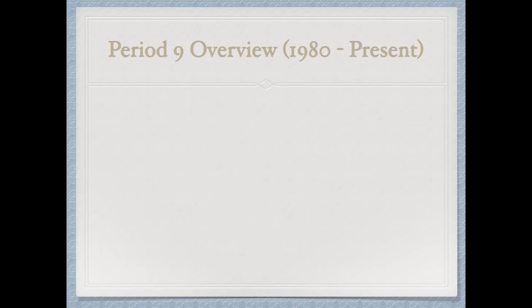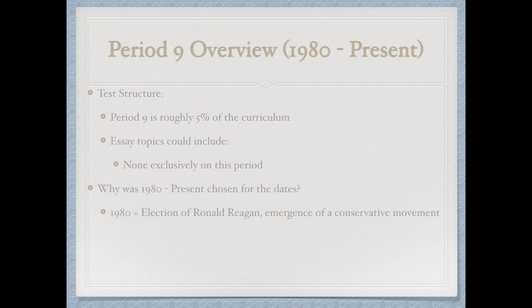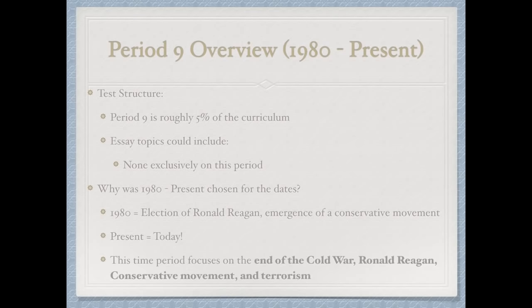Period 9 goes from 1980 to the present and is 5% of the curriculum. Essay topics will not be exclusively on this period — rather, they might continue from Period 8 into today. 1980 marks the election of Ronald Reagan and the emergence of a conservative movement. Key topics: the end of the Cold War, Ronald Reagan, the conservative movement, and modern-day terrorism.